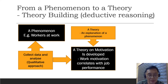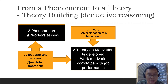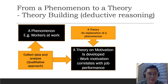Let's call this a theory of motivation. In your theory, you found that work motivation seems to correlate with job performance. Now, what is a theory? If you go through the literature, there are a lot of explanations, but to make it very simple: a theory is an explanation of a phenomenon. A theory explains to you what this phenomenon is all about. Remember this basic concept.